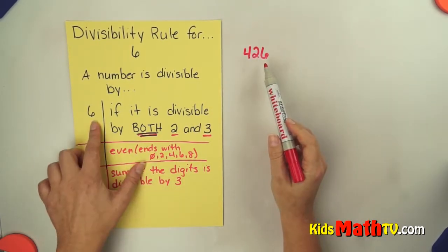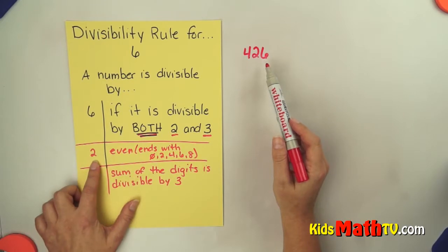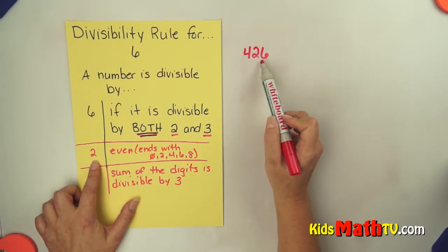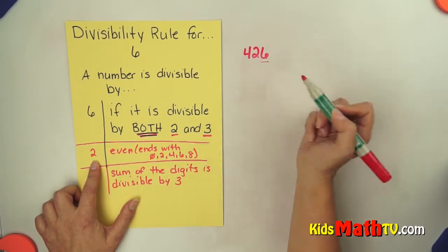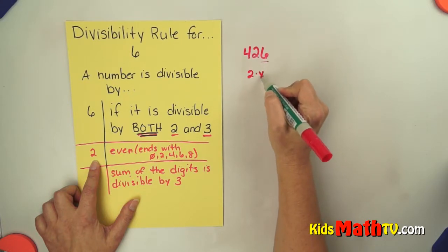So let's take the example of 426. So is 426 divisible by 6? Well, let's try the rule for 2 first. It is even, so yes, it's divisible by 2. So we can check that off.